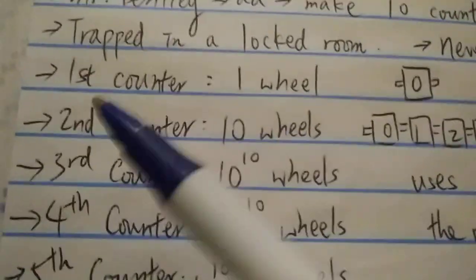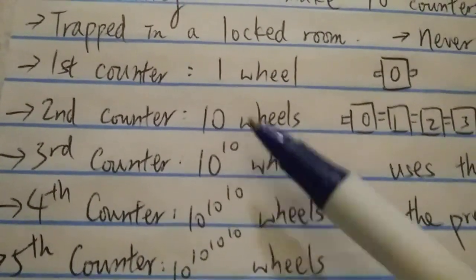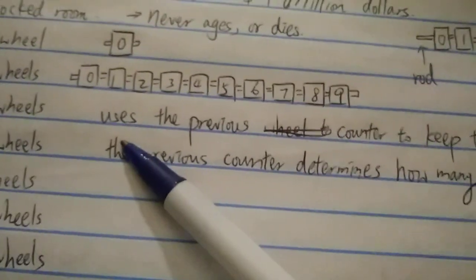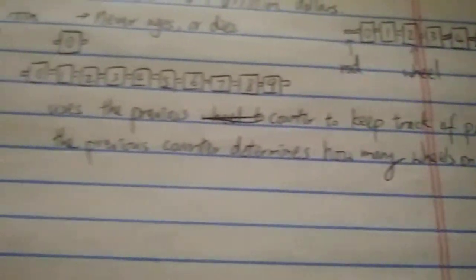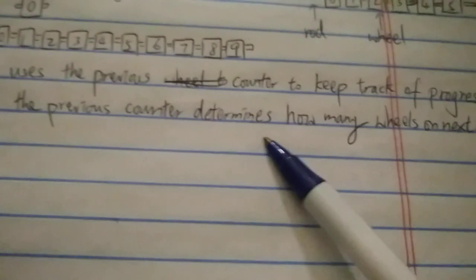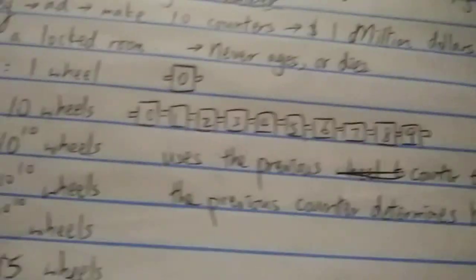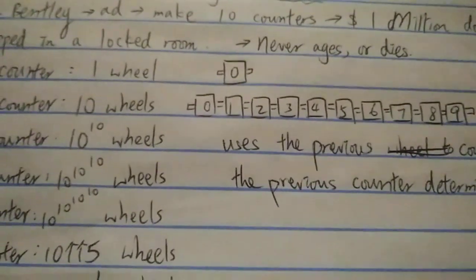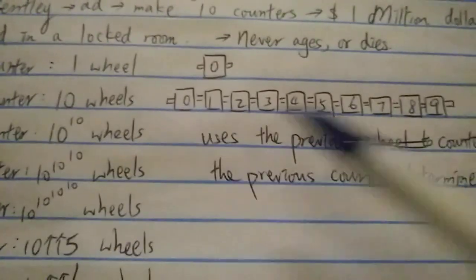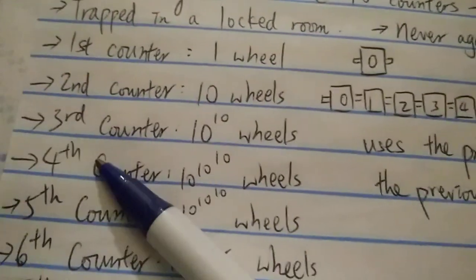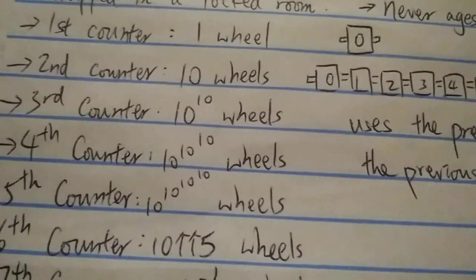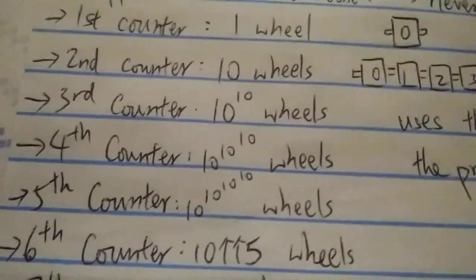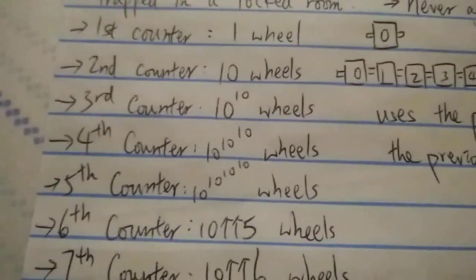The second counter consists of ten wheels. You have to use the previous counter to keep track of your progress. The previous counter determines how many wheels are on the next counter. Since the first counter is one wheel, you turn it to keep track - zero, then one, keep turning. Eventually the second counter has ten wheels. Ten wheels probably take at most a few minutes to make. In just a few minutes you've finished two counters, so you only have eight counters left. Bentley hasn't found any problems yet.